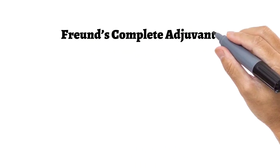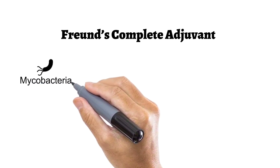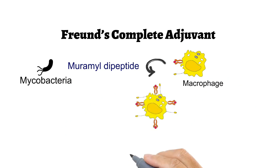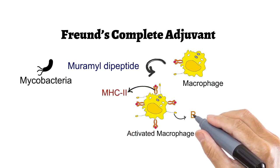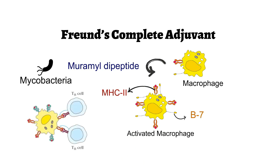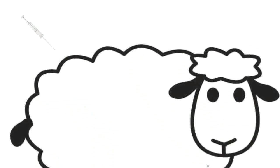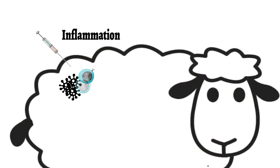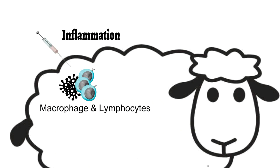The composition of Freund's incomplete adjuvant and Freund's complete adjuvant is nearly the same, but Freund's complete adjuvant has an additional component: heat-killed mycobacteria. The mycobacteria contains muramyl dipeptide in its cell wall, and this component activates macrophages. Activated macrophages express high levels of MHC class II molecules as well as B7 molecules, enhancing antigen presentation. Alum and both types of Freund's adjuvants are known to stimulate inflammation at the site of injection. Due to inflammation, large numbers of macrophages and lymphocytes are attracted to the site, further enhancing antigen presentation and increasing the speed of the immune response.